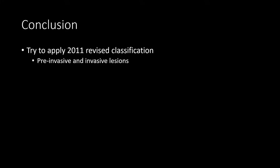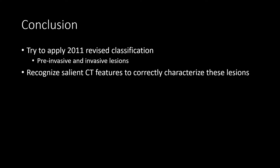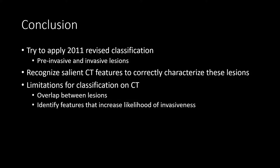In conclusion, we apply the 2011 revised classification of adenocarcinomas — no longer using the term bronchoalveolar carcinoma — and try to determine whether we're looking at pre-invasive or invasive lesions based on CT features such as size and whether they're purely ground glass or part-solid. We recognize limitations including overlap between lesion types: some part-solid nodules may be pre-invasive, and purely ground glass nodules can be invasive. Key features increasing likelihood of invasiveness include internal heterogeneity of ground glass, cystic change, air bronchograms, angular margins, pleural tagging, and the consolidation-to-ground-glass ratio.